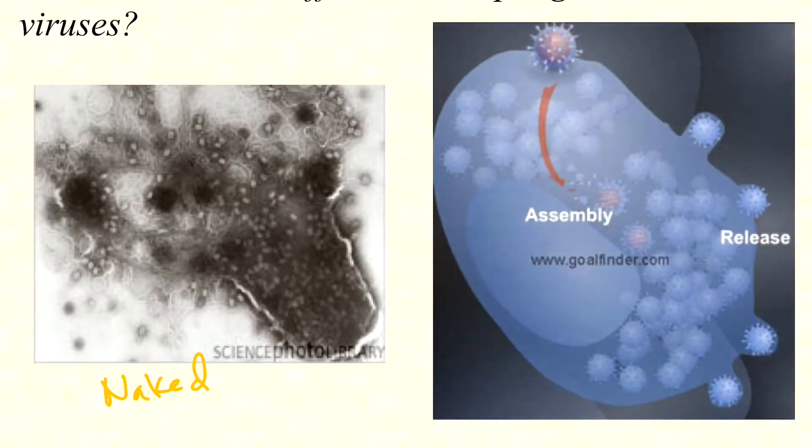A true lytic phage always lyses the host; a lysogenic phage will eventually have to lyse the host for individual virion particles to be released. Naked human viruses similarly lyse the cell — they have to burst the cell open so all the individual naked virions can get out.